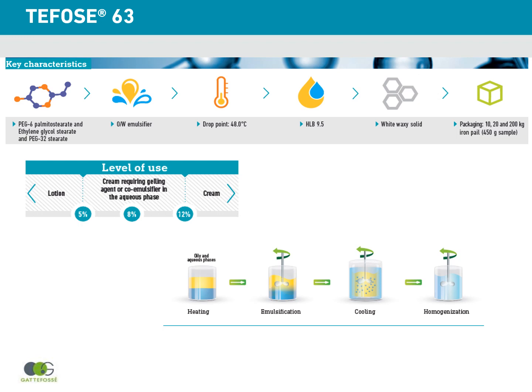These are the key characteristics for TEFO63. TEFO63 is a mixture of three components: PEG-6 palmitostearate, ethylene glycol stearate and PEG-32 stearate. It is an oil-in-water emulsifier with a drop point of 48 degrees, an HLB of 9.5, and it comes as white pellets.